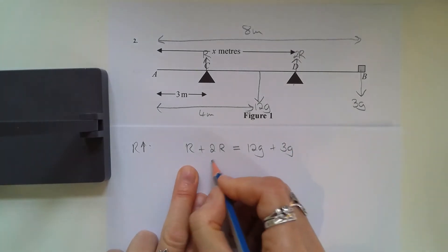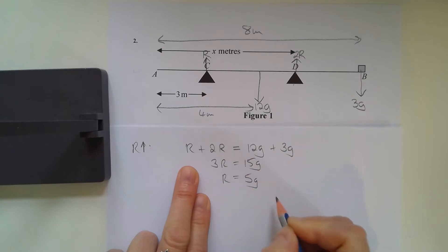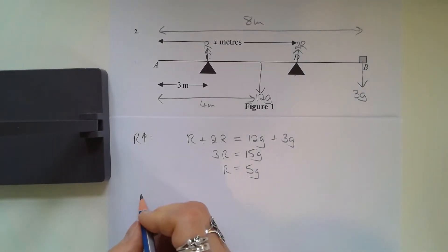Simplifying that: 3R equals 15g, so R equals 5g.